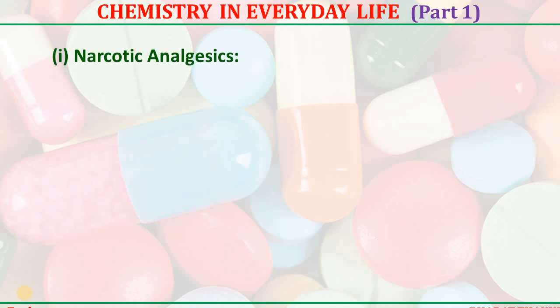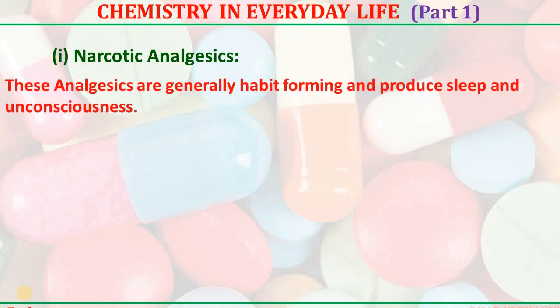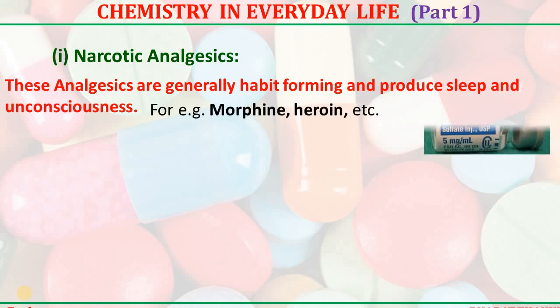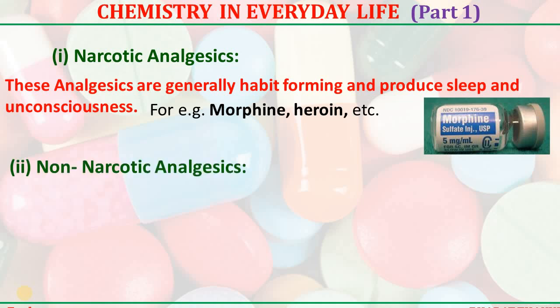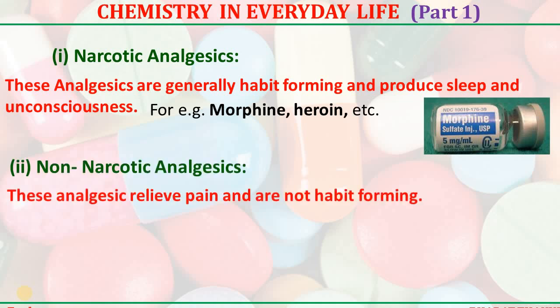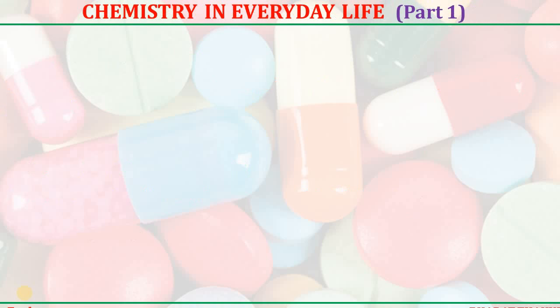First, narcotic analgesics — these are the analgesics which are generally habit-forming and produce sleep and unconsciousness. For example, morphine and heroin. Whereas the non-narcotic analgesics are those which give relief from pain but are not habit-forming. For example, aspirin, ibuprofen, etc.